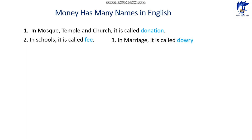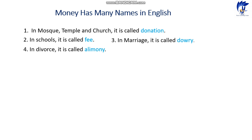Number three: in marriage it is called dowry. Number four: in divorce it is called alimony. Alimony is a kind of money when the couple divorce and the husband pays the wife for a while.